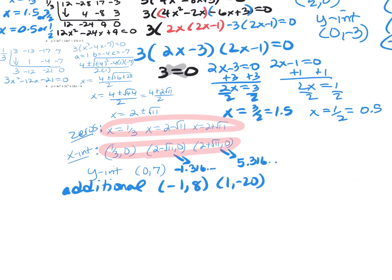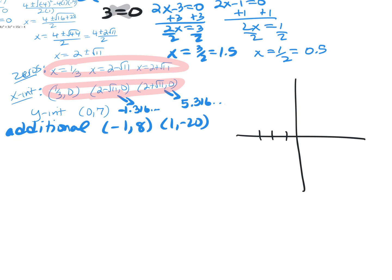Let me go ahead and graph number three. My x-intercepts: one at one third, another at 2 plus root 11 which is a little bigger than 5.3, and 2 minus root 11 which is about negative 1.3. The y-intercept is 0 comma 7. End behavior falls left and rises right. Additional points: negative one comma eight goes up here, and positive one comma negative twenty is way down here. The graph comes up, comes down, hits that zero, and then goes back up to that zero.